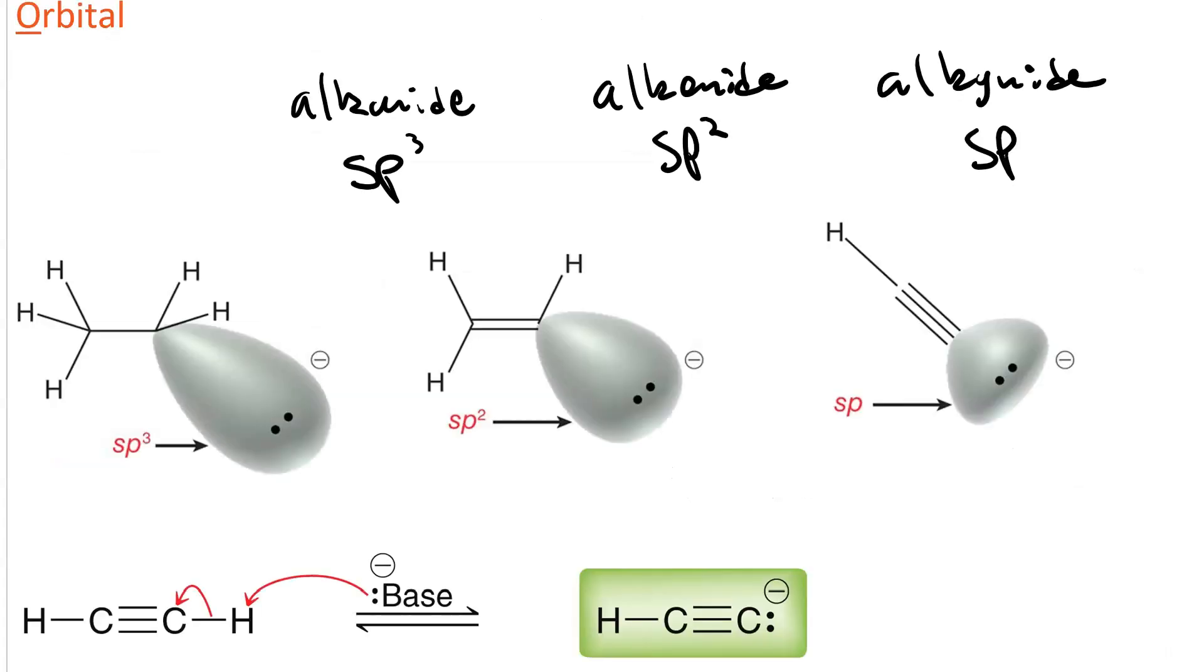And the reason that the orbital makes the alkynide more stable, consider the shapes of each of these orbitals. The sp3 orbital has the most p character, so those two electrons will be furthest from the nucleus. Whereas the sp2 orbital has less p character, and you can see the distance between the nucleus and those electrons is shorter, and it is by far the shortest for sp, because it has the least p character.